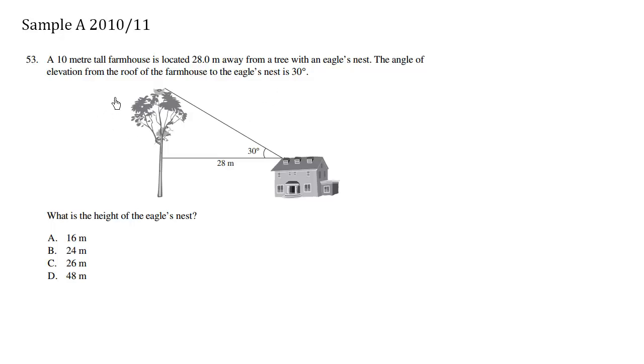A 10 meter tall farmhouse is located 28 meters away from a tree with an eagle's nest. We can see the 28 meters here. The angle of elevation from the roof of the farmhouse to the eagle's nest is 30 degrees.